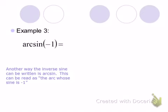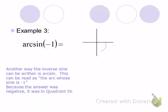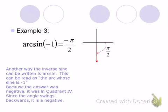The arc sine of negative 1: we're asking what arc or angle has a sine value of negative 1. Negative pi over 2 has a sine value of negative 1, and that's in the required range. The unit circle shows this as 3 pi over 2, but we go backwards to get there, which gives us negative pi over 2 for the answer.